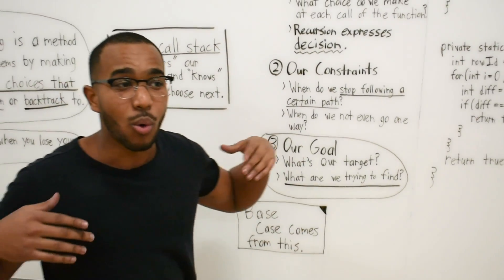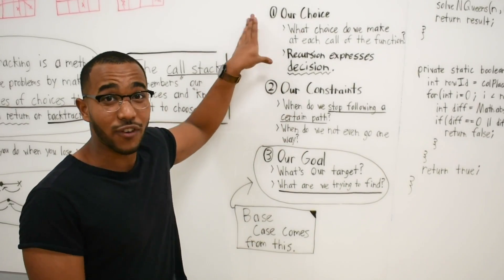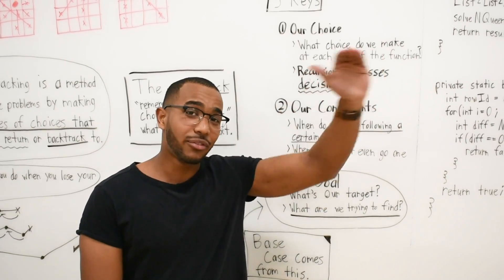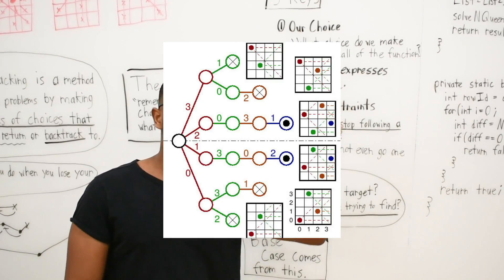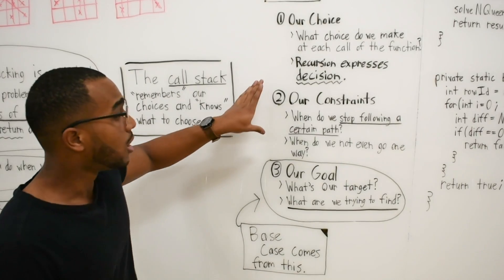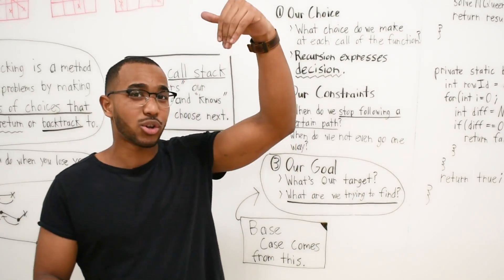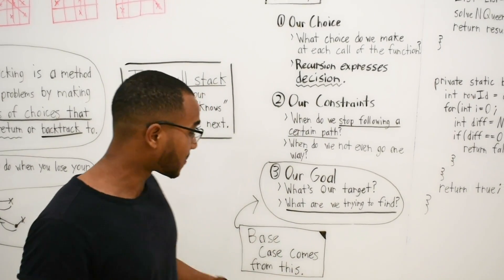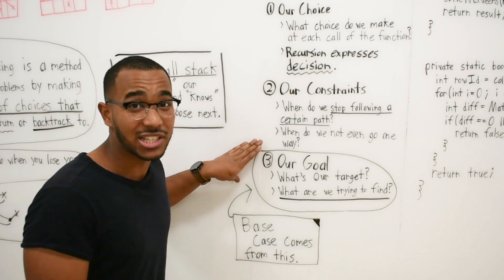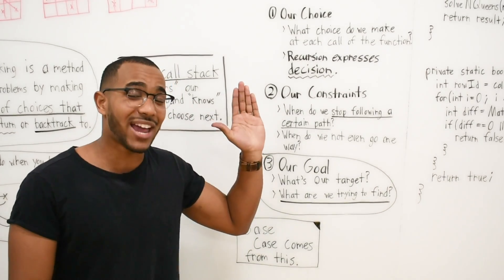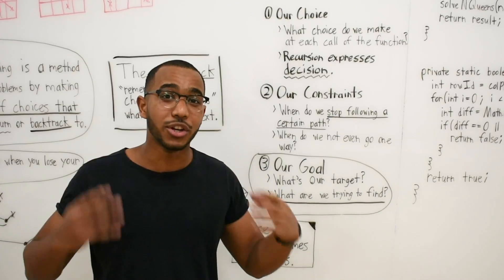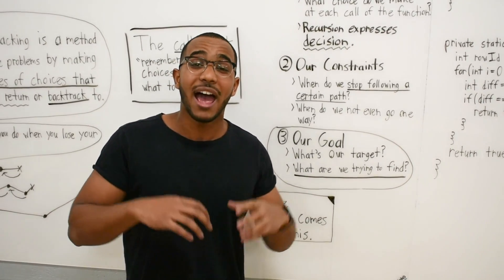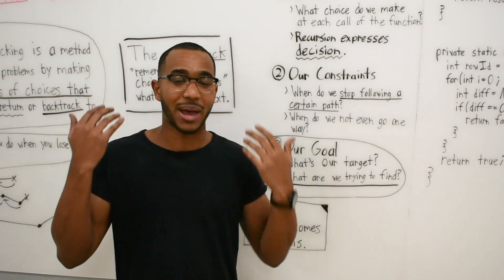So how do these three keys play into the N-Queens problem? Our choice is going to be: what column do we place our queen in at every row? Every row we make a choice — which column do we place a queen in? Our constraints are: we can't place a queen right below another queen, we can't place it diagonal, we can't place it across. And our goal is to find N placements. When we have N queens placed — one per row — we know we're finished with our recursion and can backtrack to the most recent spot and keep exploring.